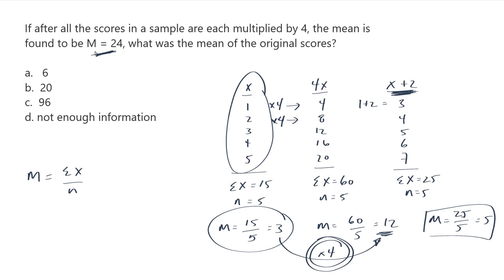So this is 4 times what? It's 4 times 6. The original mean must have been 6 because we multiplied every score in the sample by 4. That means that this would be 4 times larger, giving us 24. So the answer here is A.